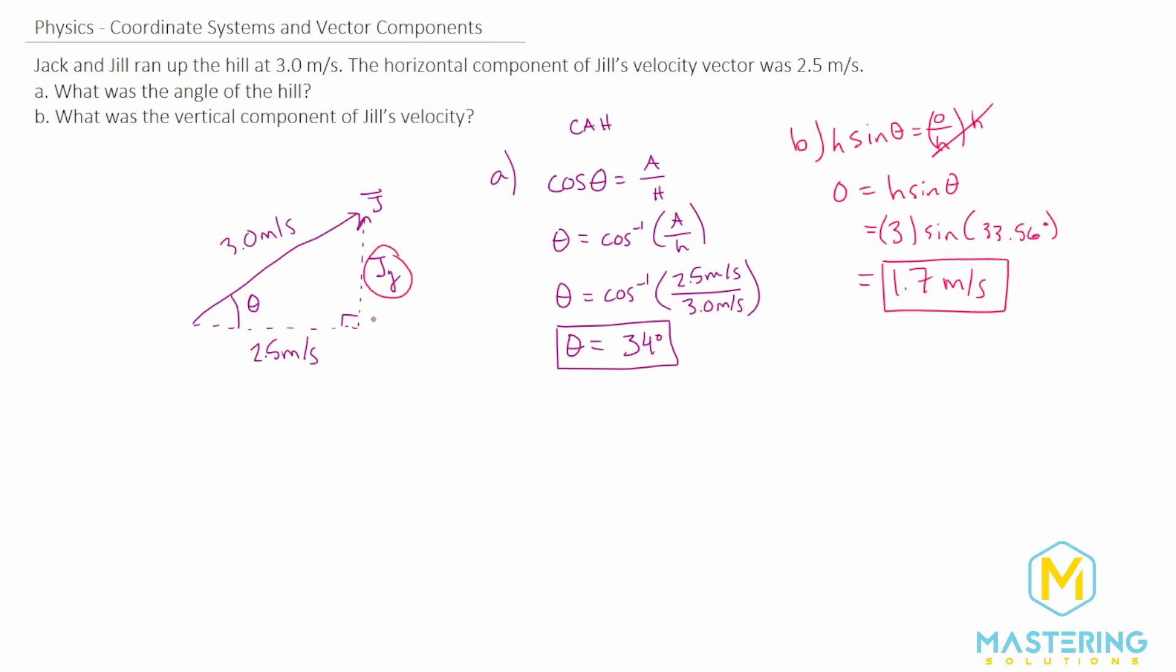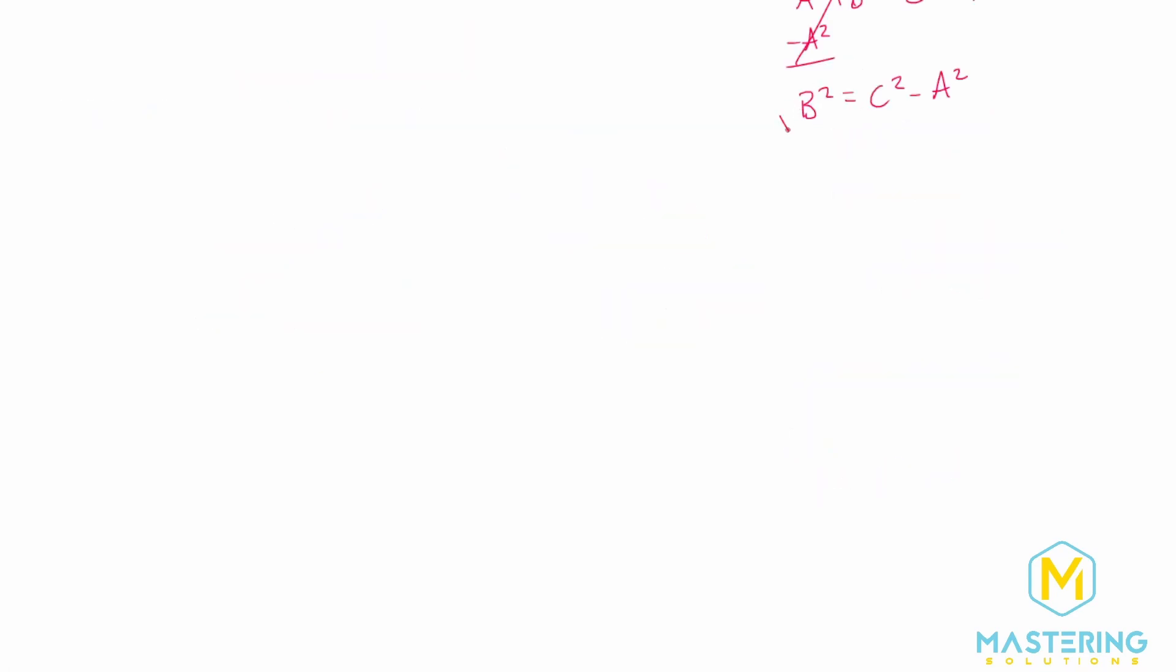You could have also used Pythagorean's theorem, and it will give you the exact same answer. We have two legs of the right triangle. So you could use a squared plus b squared is equal to c squared. We'll say that b is what we're looking for, so we'll subtract a squared from both sides of the equation. So now b squared will be equal to c squared minus a squared. We want to isolate b, so we'll take the square root. So b is equal to the square root of c squared minus a squared.